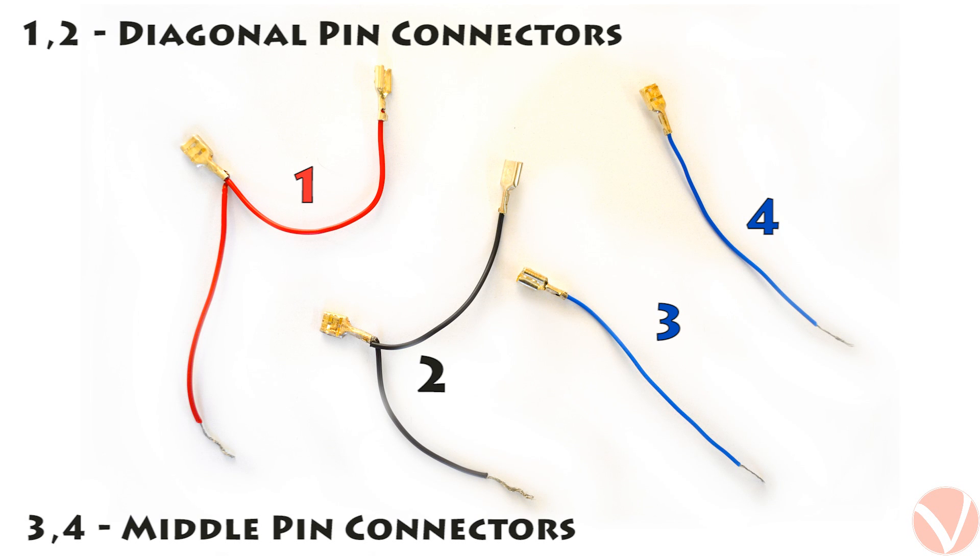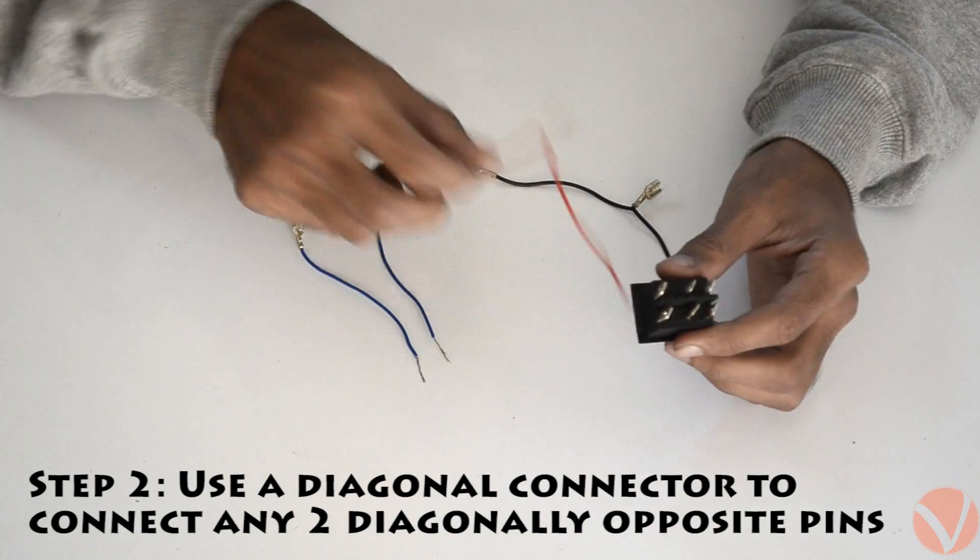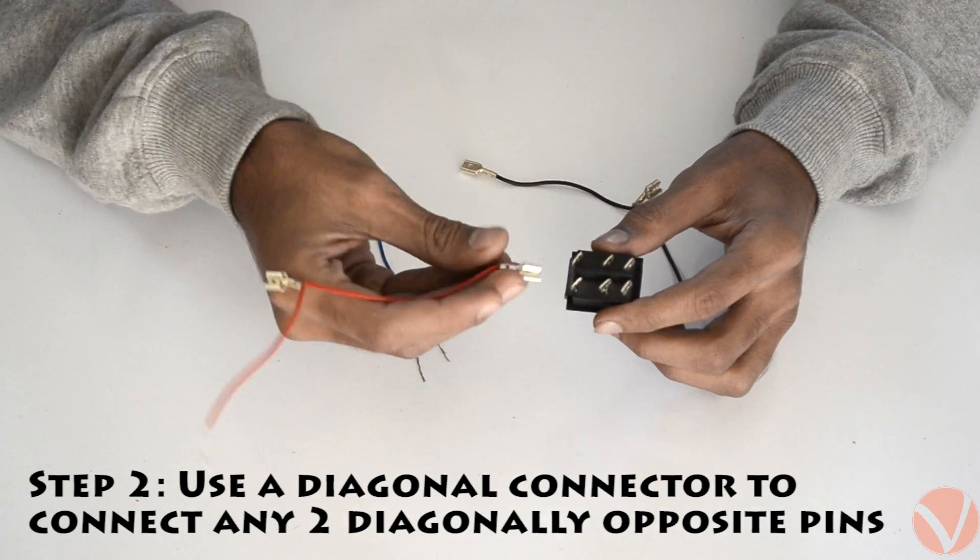Attach the remaining plugs to one end of each of the remaining wires. When you are done, you will have four connectors. Using the diagonal connector, connect any two diagonally opposite pins.